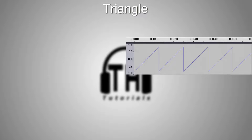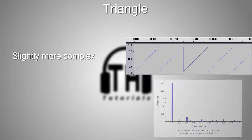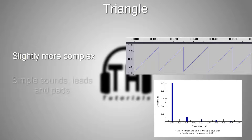Next up, we have a triangle wave, which has a few more harmonics than the sine wave, but still a small amount. Again, this is typically used as part of sounds for simple tones. It's the halfway point between the sine wave and our next waveform, which is the saw wave.